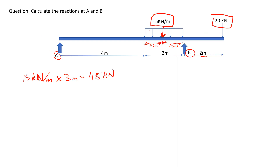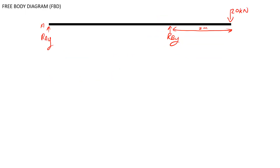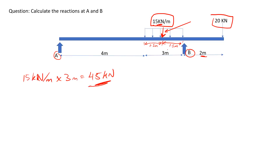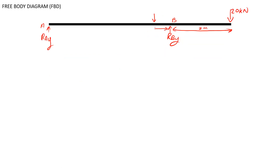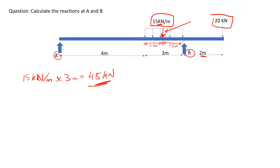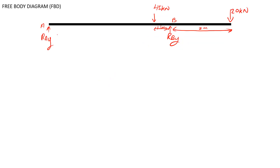As we said, we converted the uniformly distributed load into a point load of 45 kilonewtons, acting directly in the center of the 3 meters, which is 1.5 meters away from B. The distance from A to the 45 kilonewton force is 4 meters plus 1.5, which gives 5.5 meters.